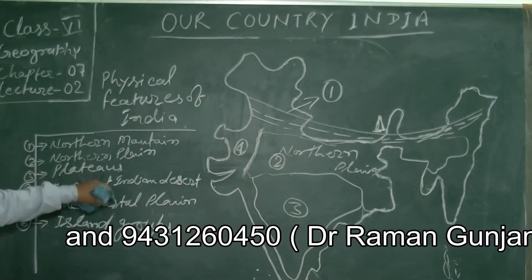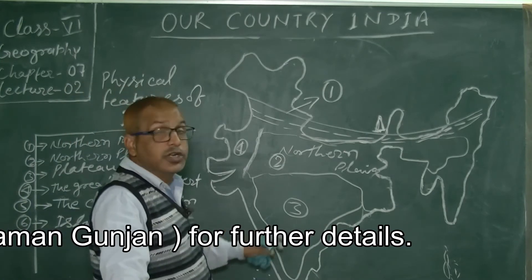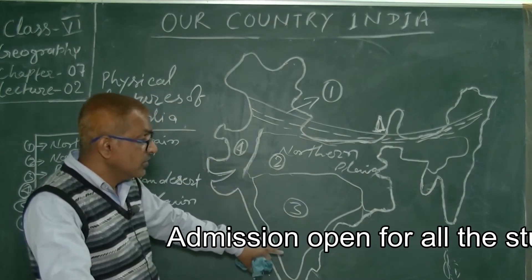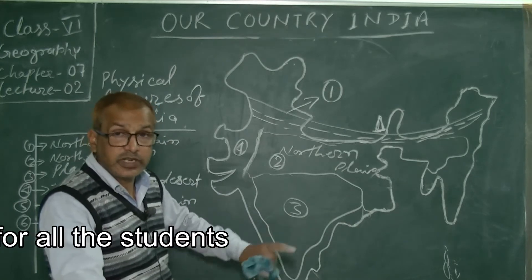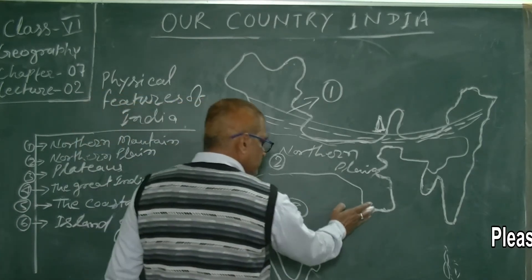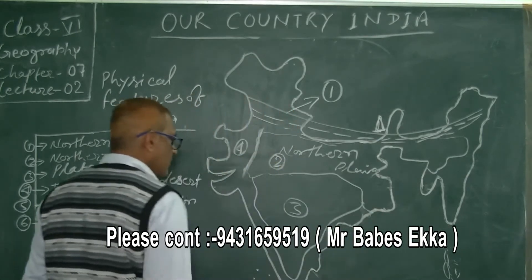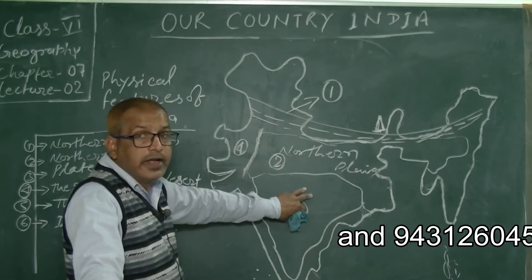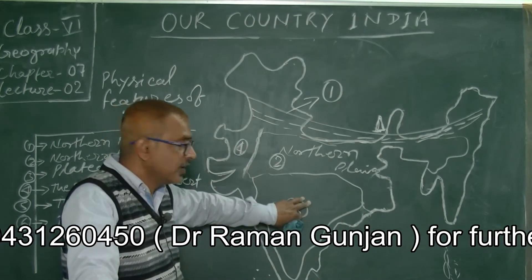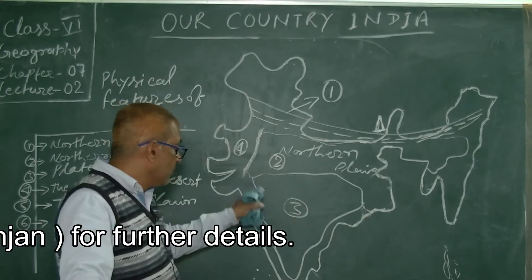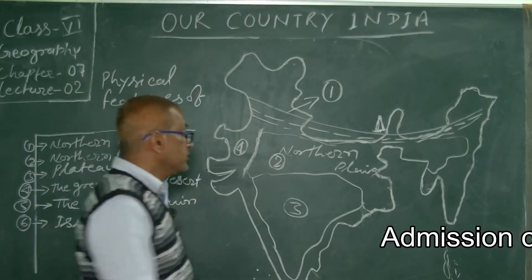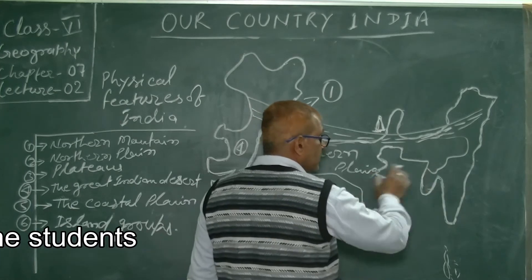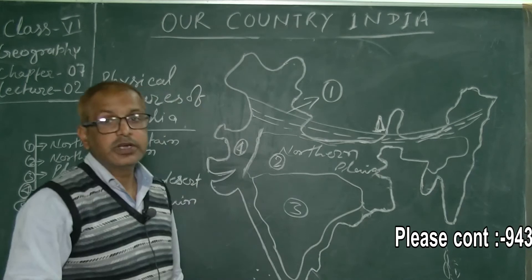Number three is the Plateau. India has two plateaus, which are triangular in shape. The upper part is called the Central Highland, which has many names such as Bagelkhand, Bundelkhand, and Malwa Plateau. North of the Central Highland is Jharkhand, West Bengal, and it extends to Bangladesh and Tripura — this is a small plateau region.